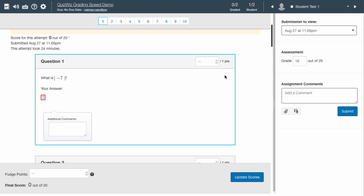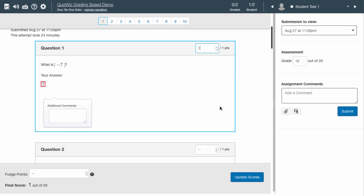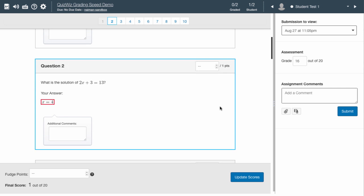The first answer is correct and deserves full marks, which is one point and takes one click of the up arrow. The second answer is wrong, but it takes two clicks of the arrows to assign zero points.